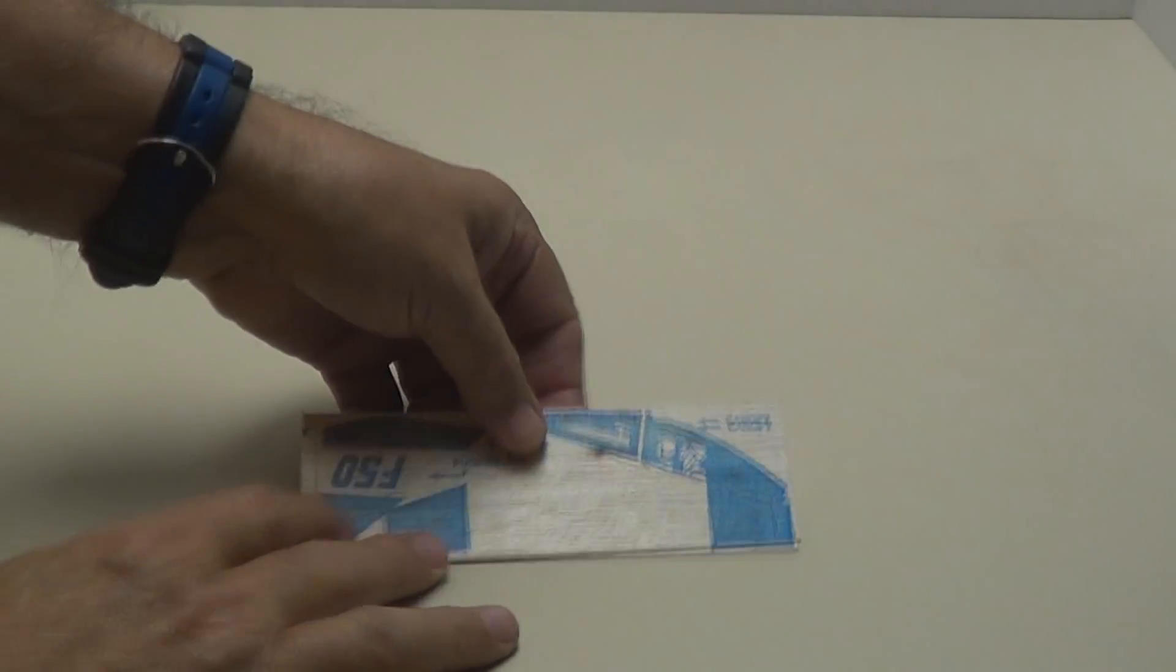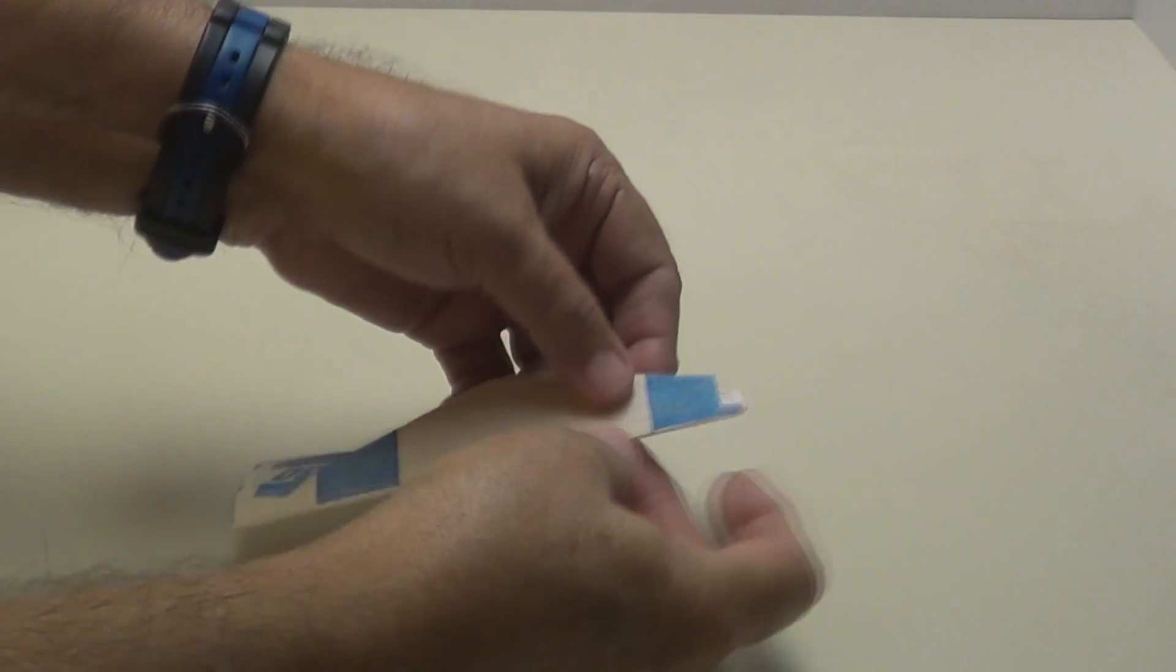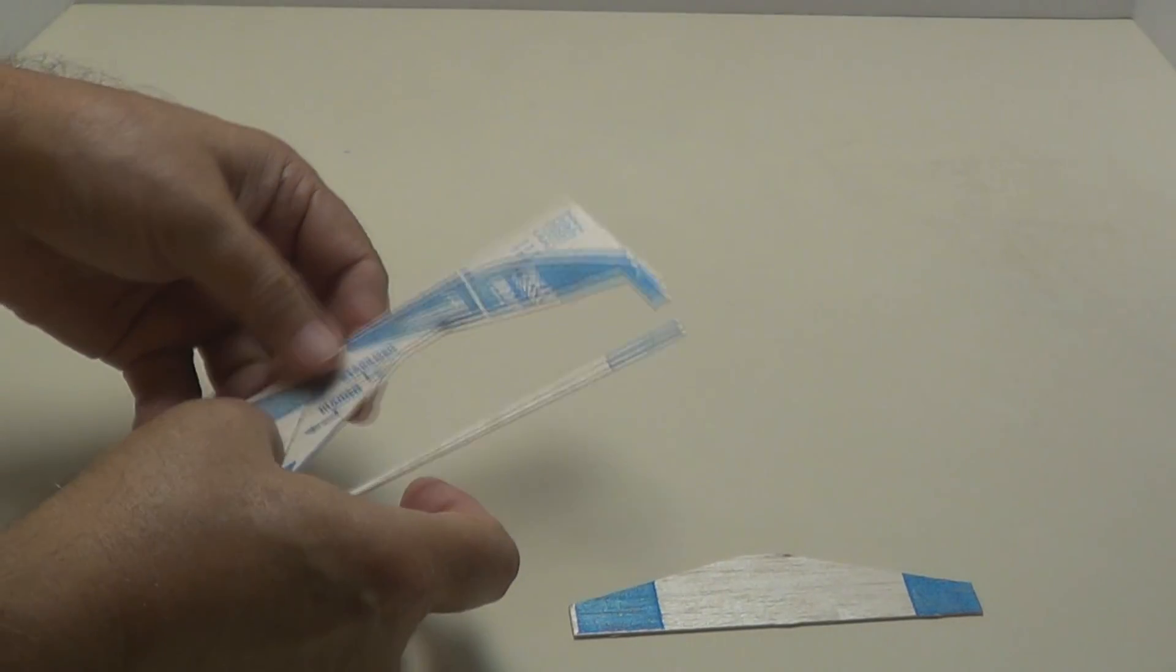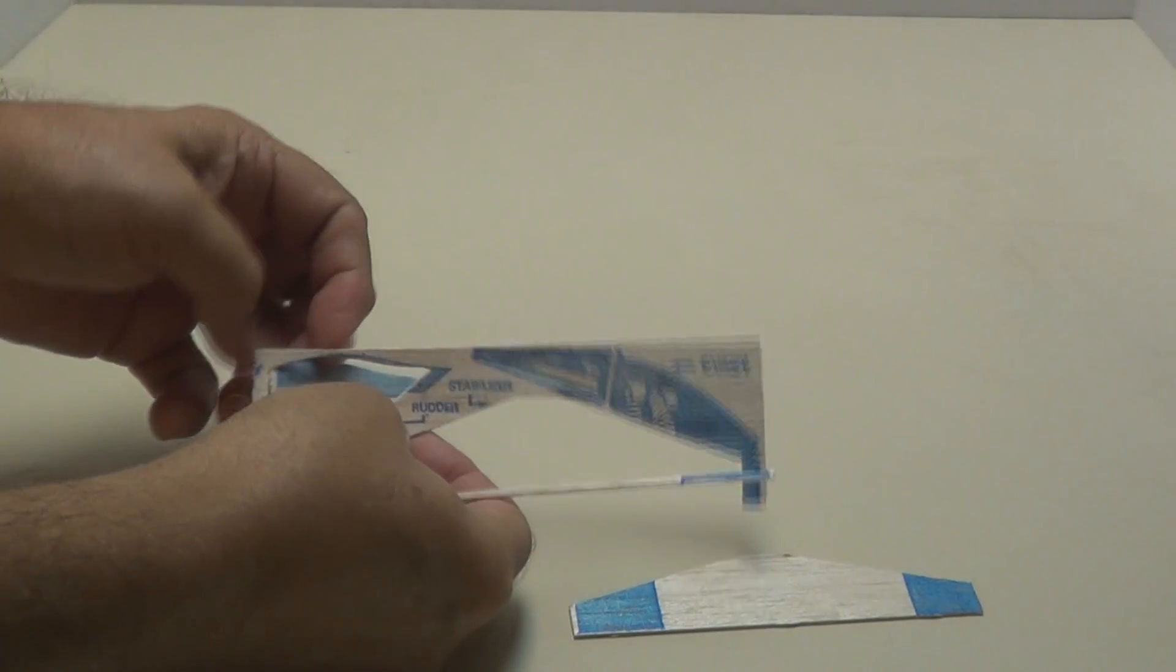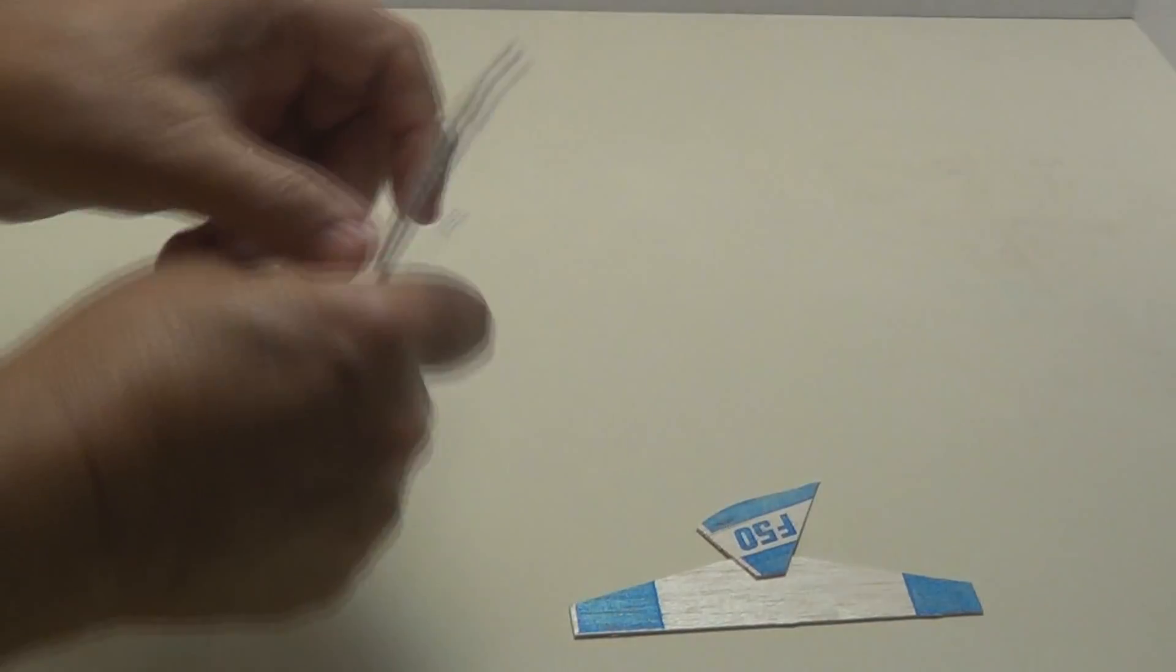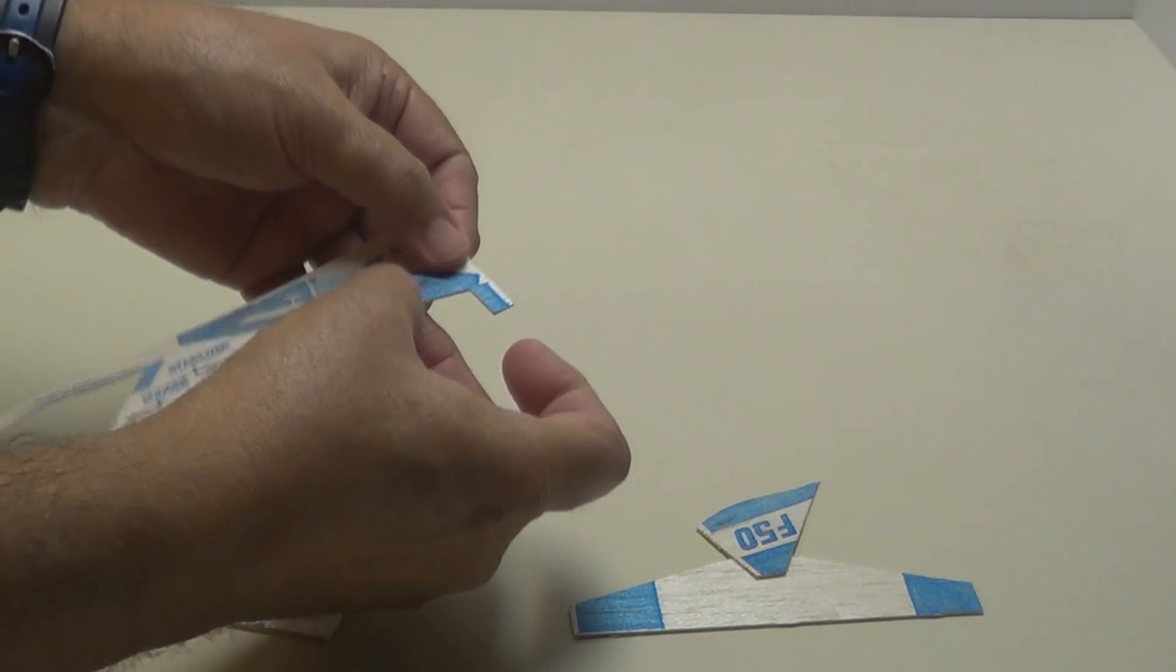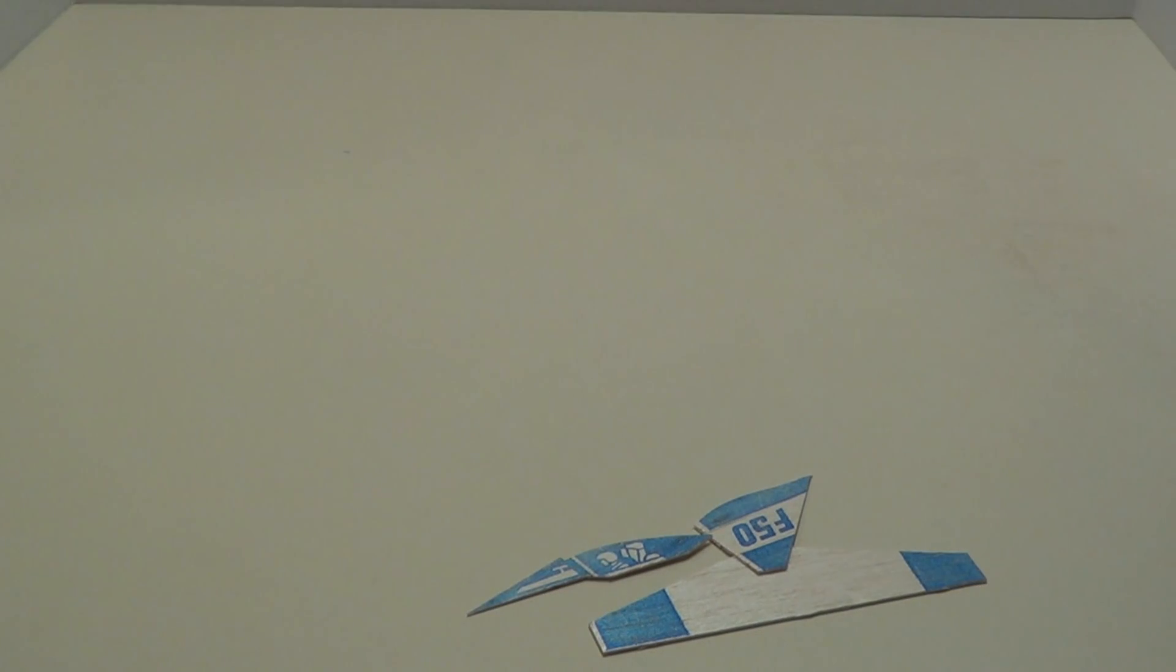Okay, we'll need to punch out the parts for the plane here. Here is the elevator, it just punches out, they're already cut. Here is the rudder, and here is the cockpit. There's your pieces ready to go.